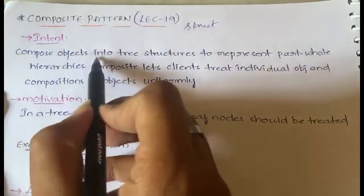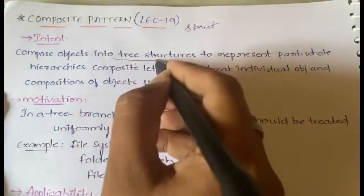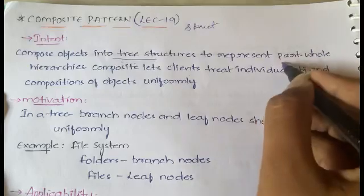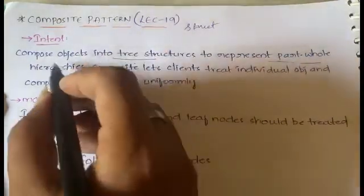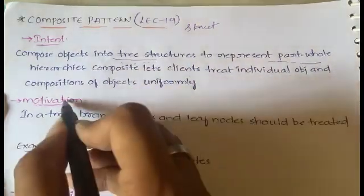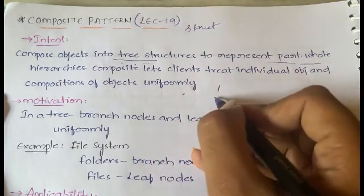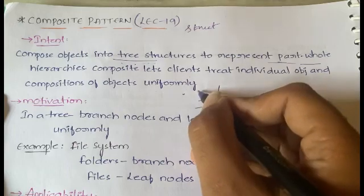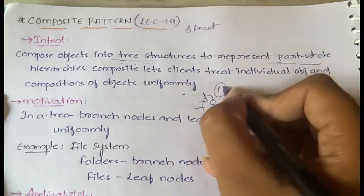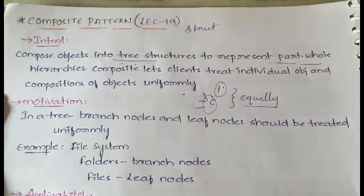Coming to the intent: Composite composes objects into tree structures to represent part-whole hierarchies — meaning it organizes objects in the form of a tree. It also lets the client treat individual objects and compositions of objects uniformly. A single object and a composite object — formed by integrating two or more objects — are both treated equally.